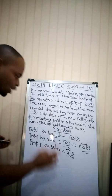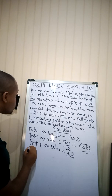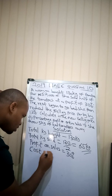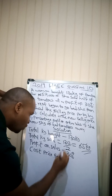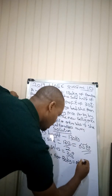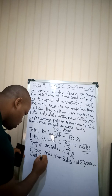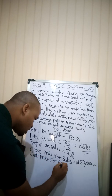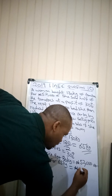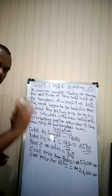Now let's get the cost price for this. Remember that the cost price for 130 kg is 52,000 Naira. So the cost price for 65 kg — that is half of it — will be 52,000 over 2, which gives us 26,000 Naira. This is the cost price for half of the tomatoes that she sold.